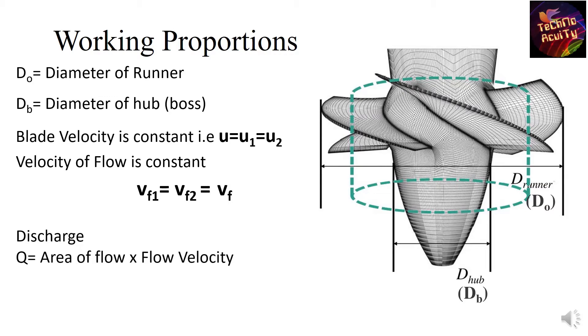The discharge through a turbine can be calculated as Q equals to area of flow times flow velocity. Where the area of flow can be calculated by the formula pi by 4, Dr square minus Db square, and multiply by the velocity of the flow we get the discharge.